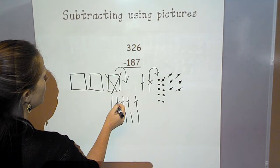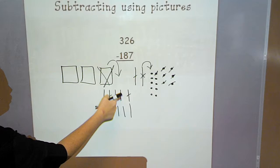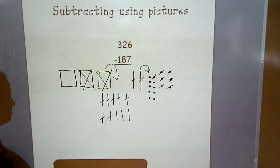So I'm still subtracting 187. I've subtracted 7 ones, 8 tens, and now 100. I use this 100 to regroup. So I've still got to subtract my 100. So now I have to figure out, well, what's left?